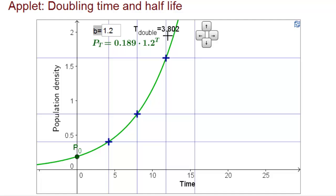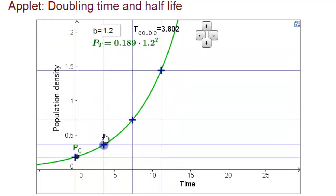The applet automatically calculates the doubling time for you. It's simply log 2 over log b. And the doubling time is illustrated by the vertical blue lines, which you can move by dragging any of the x's.